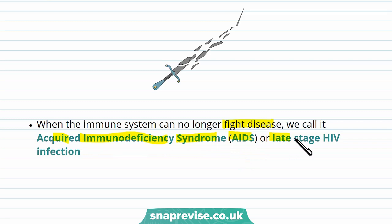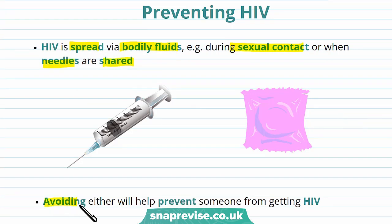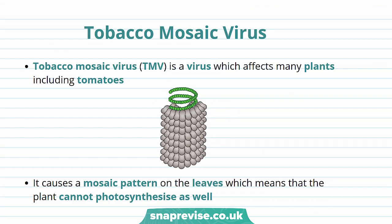We also call it late-stage HIV infection. If someone has AIDS, they may not be able to fight simple infections or cancers, which could be fatal. Luckily, there are some ways of preventing HIV. As HIV is spread through bodily fluids — for example during sexual contact or when needles are shared — by avoiding sharing needles and using barrier methods such as condoms during sexual intercourse, this might help prevent someone from getting HIV.